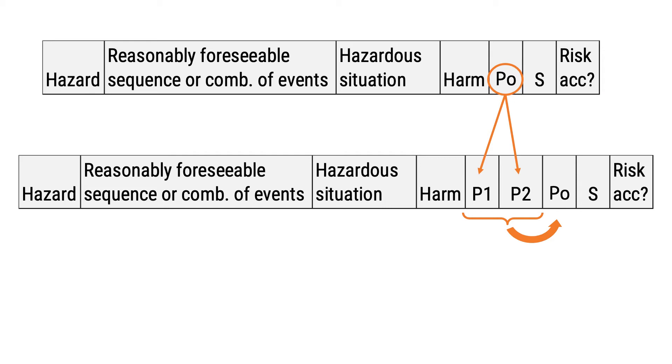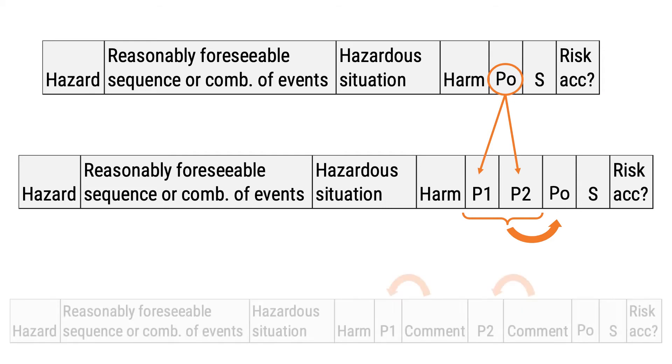I often struggle to remember the rationale behind the numbers. When this happens, comments are invaluable. Comments do not need to appear in the formal documentation and can be hidden. If you work in Excel, you can easily hide comment columns in the formal version of your document. I'll now show you how to expand the risk analysis section of an HTM. The same logic applies to the risk control section — you simply add two more columns to include P1 and P2. I will now walk you through a made-up example and show what an HTM could look like when implementing P1 and P2.